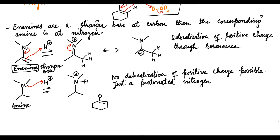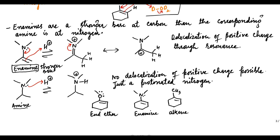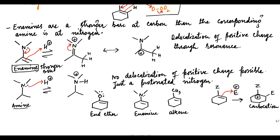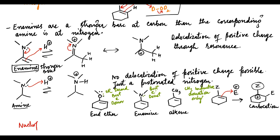To understand the concept further, let us rank enol ether, enamine, and alkene in order of decreasing nucleophilicity. All three species act as pi nucleophiles. The attack of an electrophile gives a carbocation intermediate. The better the substituent can donate electrons, the more stable the carbocation. Nitrogen is the best electron donor, alkoxy is second best, followed by alkyl group which can perform inductive donation only. Thus nucleophilicity order is: enamine first, enol ether second, and alkene third.